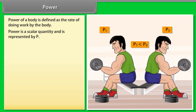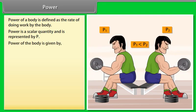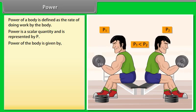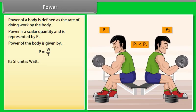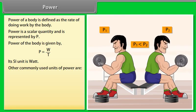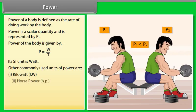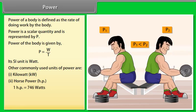Power is a scalar quantity and is represented by P. Power of a body is given by P = W/T. Its SI unit is Watt. Other commonly used units of power are Kilowatt and Horsepower. One Horsepower equals 746 Watts.